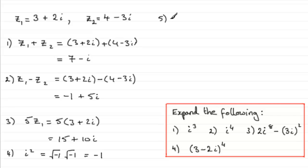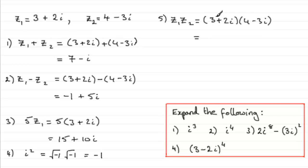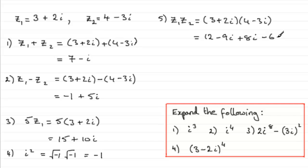For number 5, suppose we had to multiply Z1 with Z2. We've got 3 plus 2i being multiplied by 4 minus 3i. To do this, we multiply out the brackets in the normal way. We start with the 3: 3 times 4 is 12, and 3 times minus 3i is minus 9i. Then plus 2i times 4 is plus 8i. And then we've got plus 2i times minus 3i, so that's going to be minus 6i².